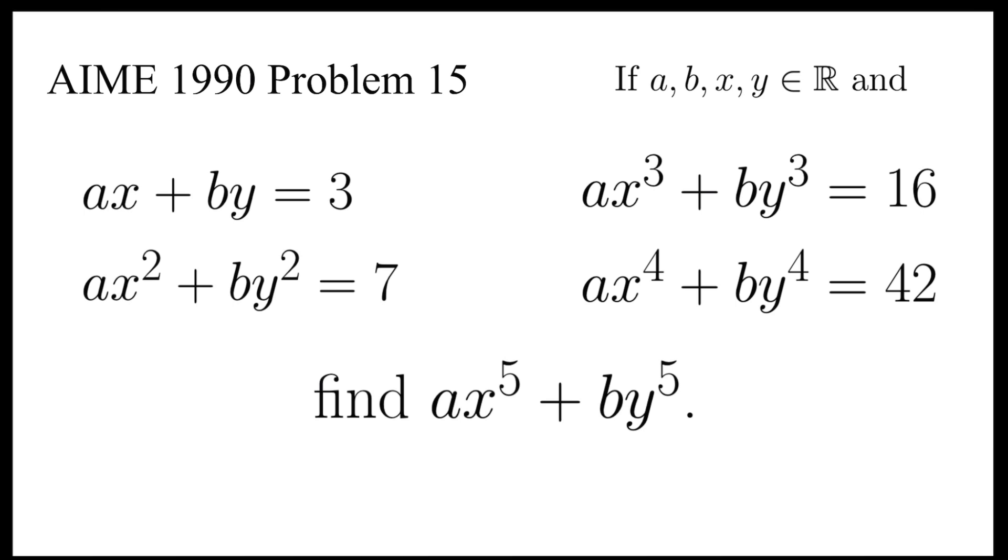It is given that a, b, x, y are real numbers. ax + by = 3, ax² + by² = 7, ax³ + by³ = 16, ax⁴ + by⁴ = 42. And we have to find ax⁵ + by⁵.